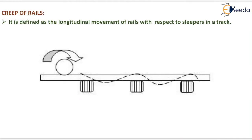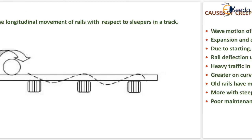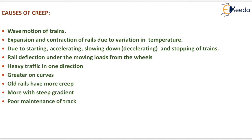The next topic is creep of rails, defined as the longitudinal movement of rails with respect to sleepers in the track. Causes of creep include: wave motion of trains, expansion and contraction of rails due to variation in temperature, starting, accelerating, slowing down and stopping of trains, and rail deflection under moving loads from the wheels.